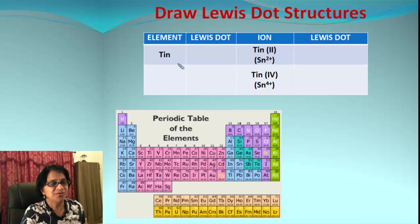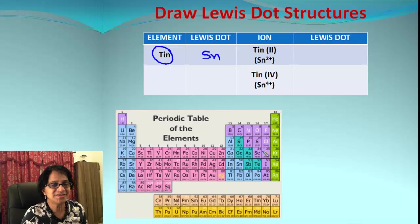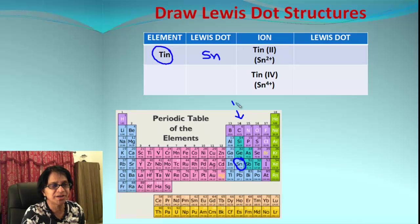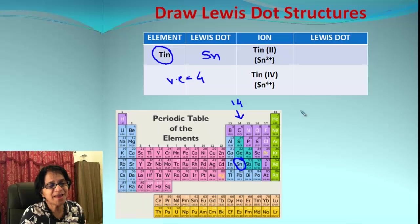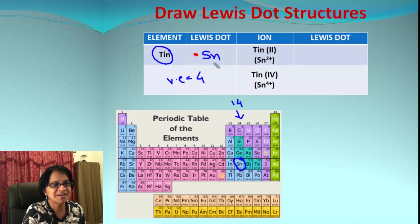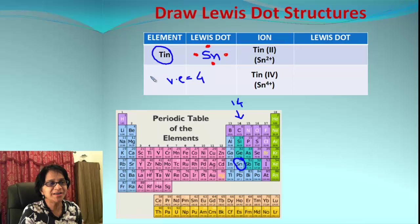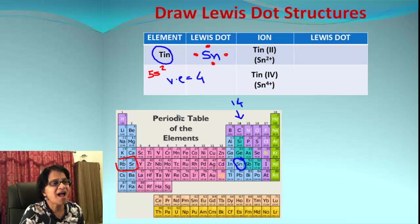Let's learn how to draw a Lewis dot structure. We have the element tin, with the symbol Sn. Let's locate tin in the periodic table — that's where we find it, in group number 14. If it's group 14, the valence electrons are four. So we're going to show those as four dots around Sn — that is the symbolic representation of the tin atom.